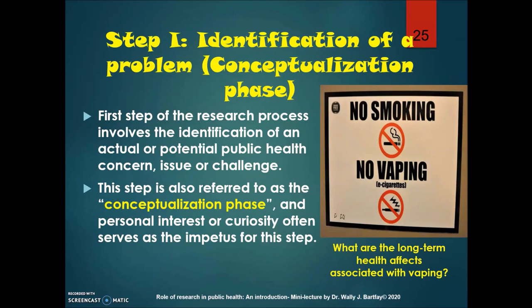Step one involves the identification of a problem, also referred to as the conceptualization phase. The first step of the research process involves the identification of an actual or potential public health concern, issue, or challenge — personal interest or curiosity often serves as the impetus for this step. For example, you might be interested in examining the long-term health effects associated with vaping in youth.